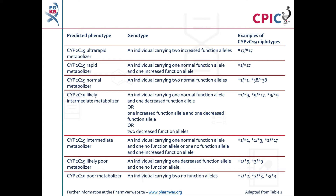This can include rare increased function, reduced function, and non-functional alleles which are not routinely screened for in some genotyping tests. Further information about CYP2C19 alleles can be found at the PharmVar website at www.pharmvar.org. A link to PharmVar is also given in the description below this video.